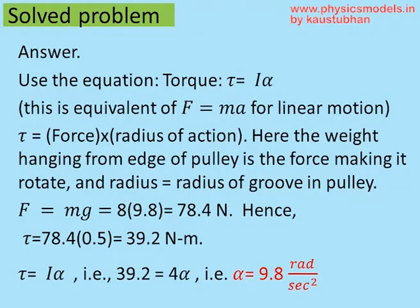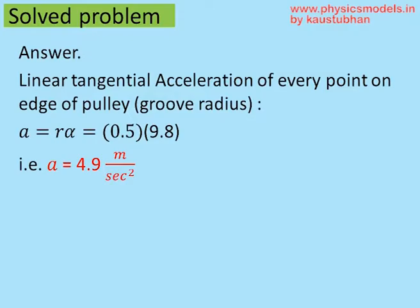So the pulley is accelerating angularly. Now, the linear tangential acceleration at every point of the rim of the pulley is A equals R into alpha. Radius is 0.5, alpha we just found is 9.8. So A equals 4.9 meters per second squared.